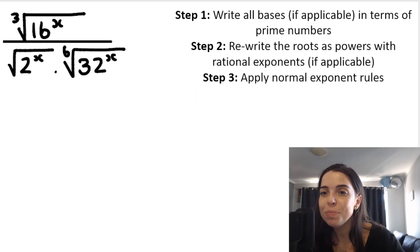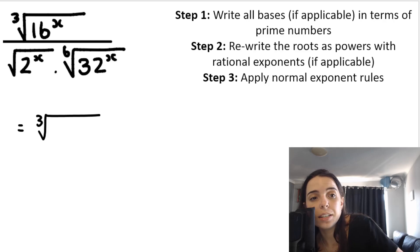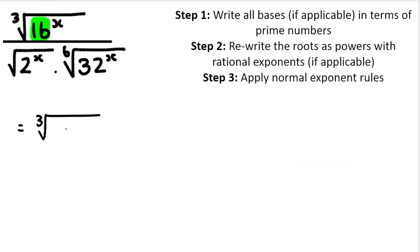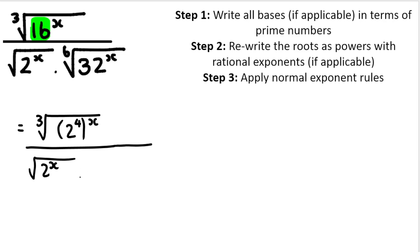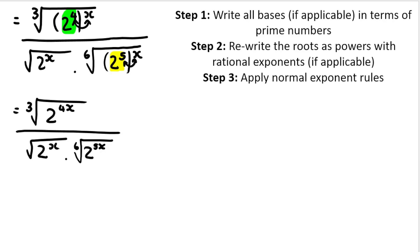Let's take a look at the second example. In this example, the first step is relevant: write all bases if applicable in terms of prime numbers. So instead of 16, you type 16 equals shift fact onto your calculator. I'm going to write 2 to the power of 4 because 16 can be written with its prime base as 2 to the power of 4, and that's raised to the exponent of x. Then we've got 2 to the power of x, and then 32 can be written as 2 to the power of 5 raised to x. In the first step I've rewritten 16 and 32, then in the second step I'll do power inside times power outside.